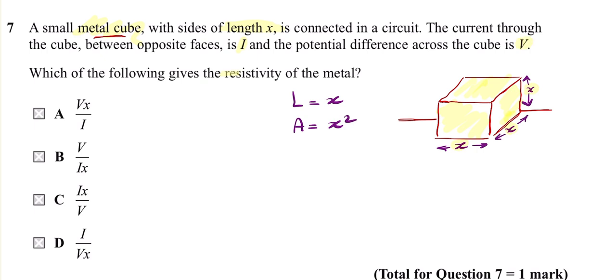He's asking for resistivity of the metal. No problem at all. I just said l here which is x, because this is the length of the metal cube or as a metal wire. The cross-sectional area is x squared, the area of the cube.